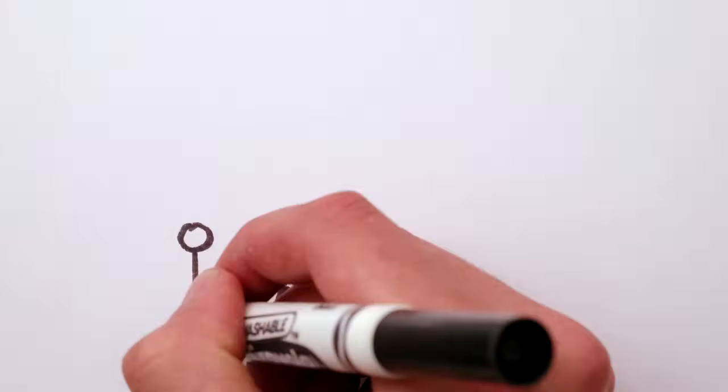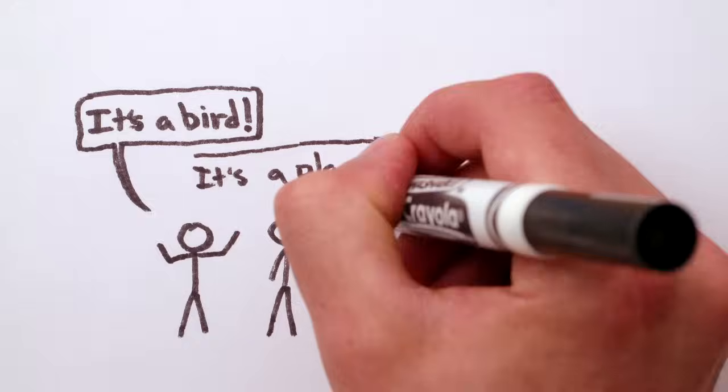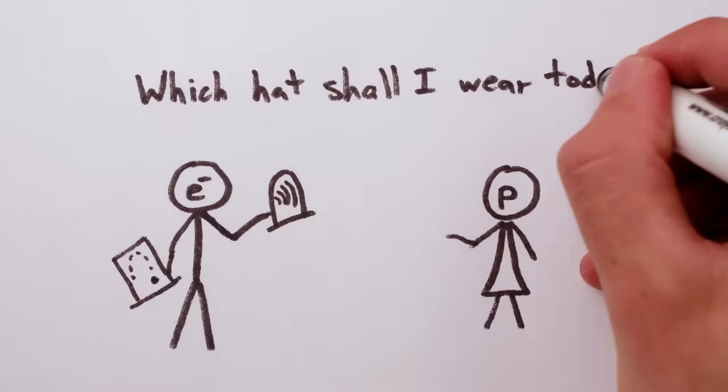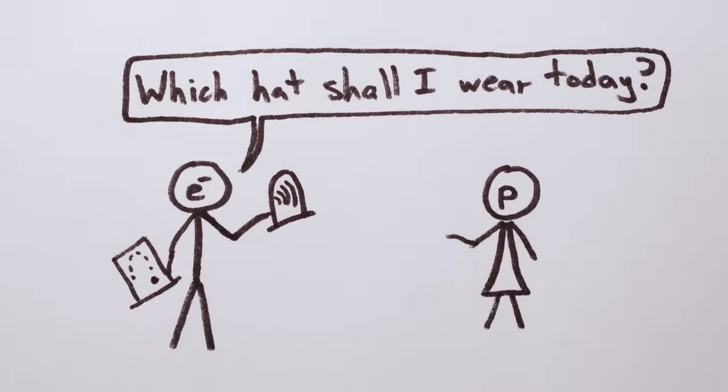But when it comes to the physics of the very small, what we see is a wave-particle duality. Sometimes very small things behave like particles, and sometimes they behave like waves. Flip-floppers.